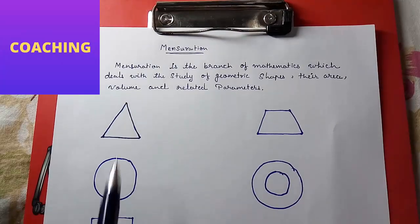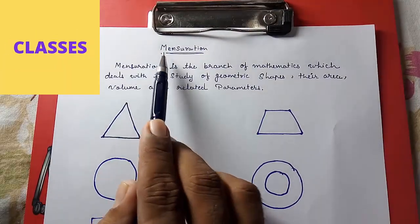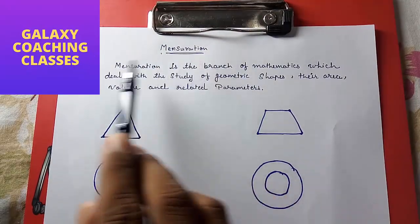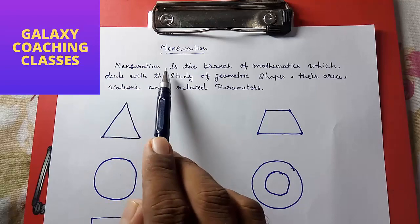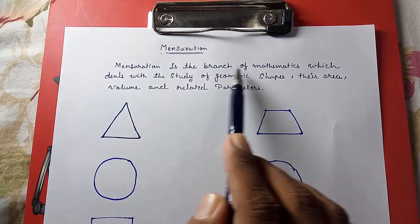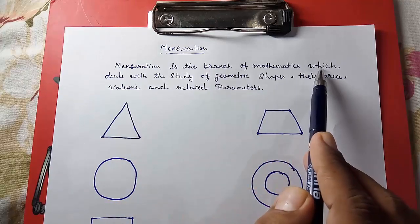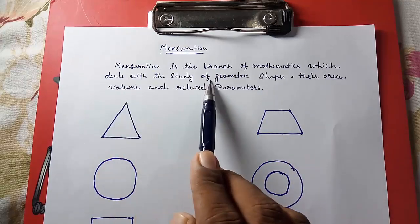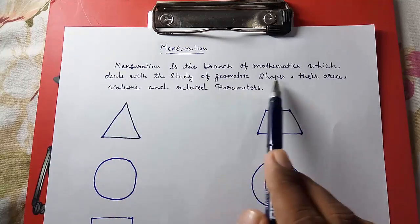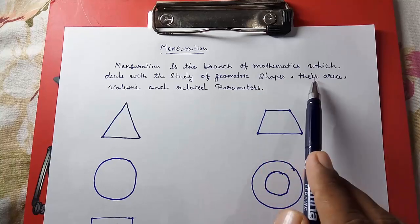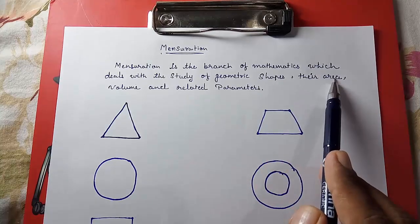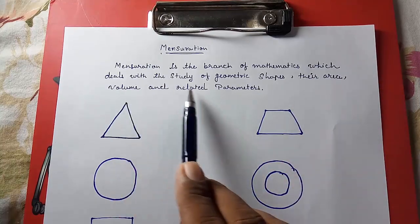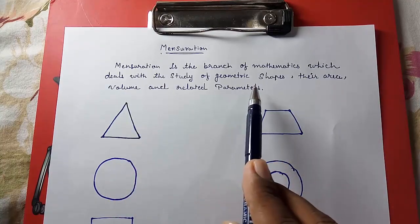Hello friends. Today we are going to study about mensuration. Mensuration is the branch of mathematics which deals with the study of geometrical shapes, their area, volume and related parameters.